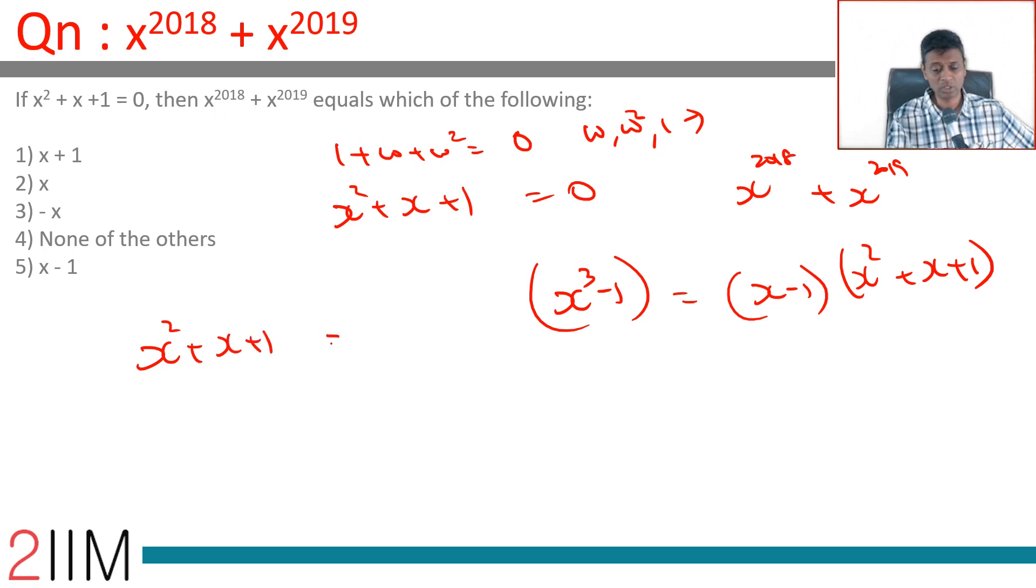How do we solve x² + x + 1 = 0? Multiply by x on both sides: x³ + x² + x = 0. Since x² + x = -1, we have x³ - 1 = 0, or x³ = 1.